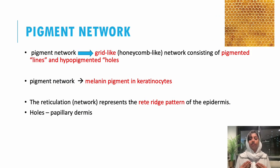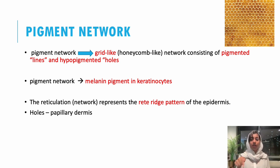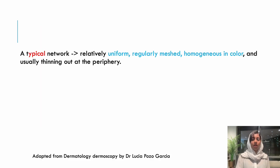Coming to pigment network, this is yet another important concept. The pigment network is normally present in all individuals and is more pronounced in skin of color. Pigment network indicates melanin in the keratinocytes. As you can see in the figure, it looks just like a honeycomb, with grids and hypopigmented holes. In the epidermis, the rete ridges correspond to the lines and the papillary ridges correspond to the hypopigmented holes. Knowing the pigment network helps us differentiate between a benign and a malignant lesion.